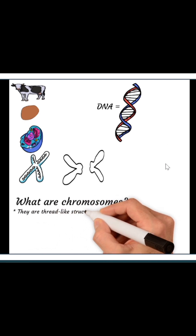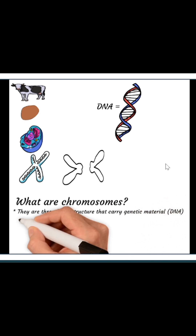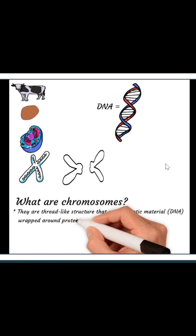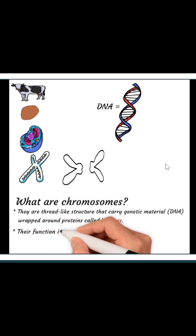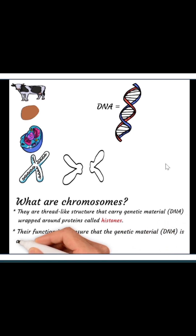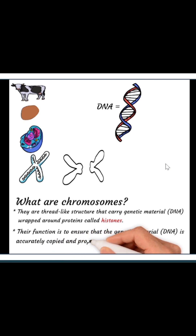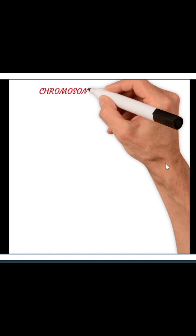What are chromosomes? They are thread-like structures that carry the genetic material — that is the gene or the DNA. One important thing about them is that they are wrapped around proteins called histones. Their basic function is to ensure that the genetic materials are correctly and accurately copied and properly distributed during the time of cell division.